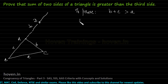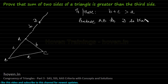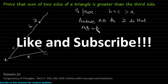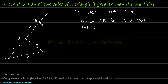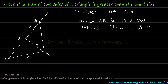So we will produce AB to point D so that AD is cut equal to B. Next, let us join D to C. We observe that triangle ADC is an isosceles triangle.